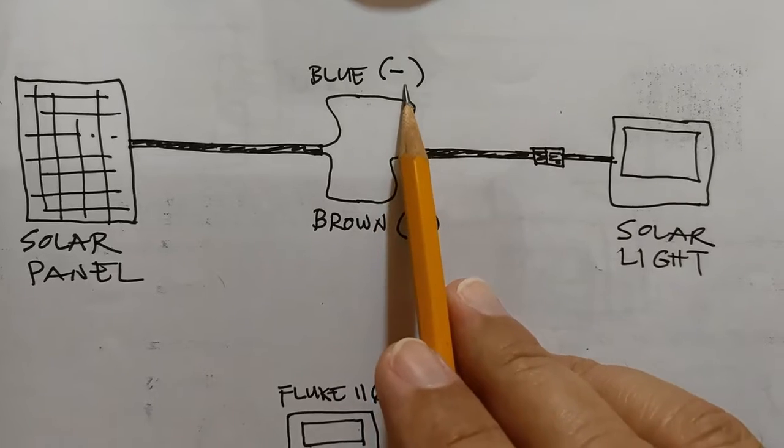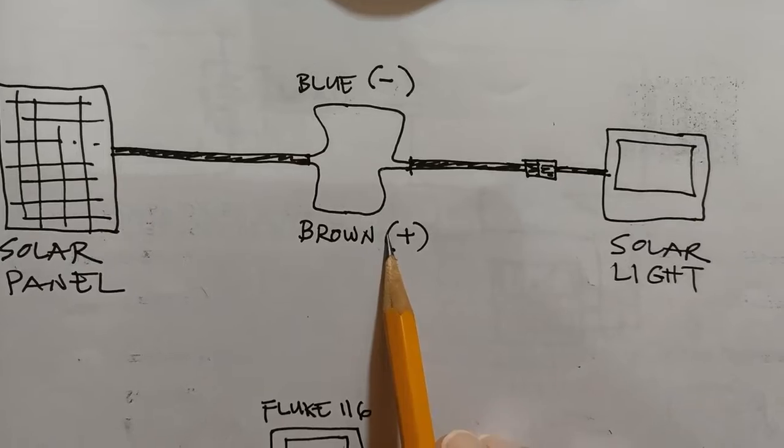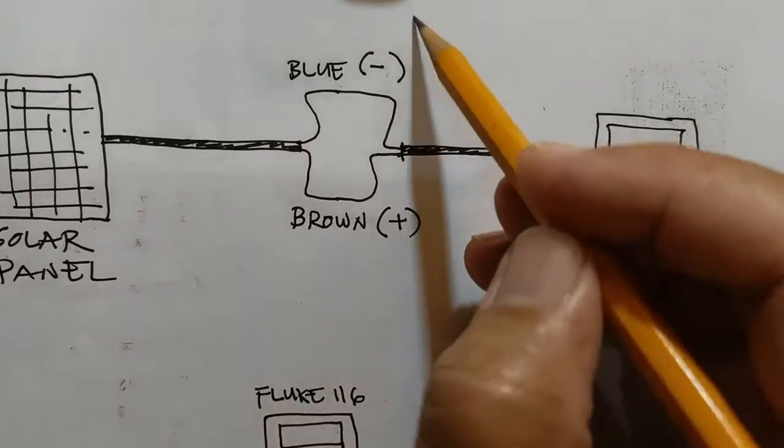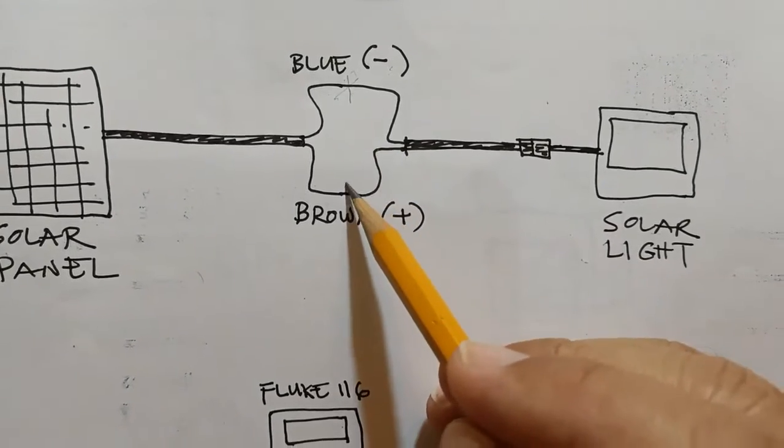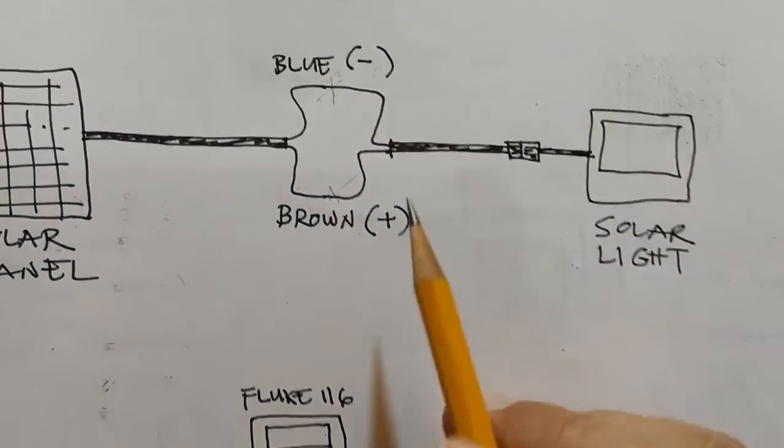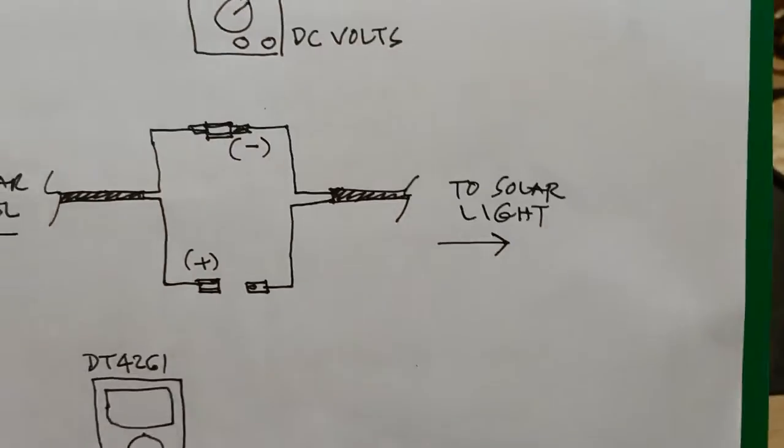The blue conductor represents the negative polarity and the brown conductor represents the positive polarity. I cut them off in this portion in order for me to install crimp connectors there that would facilitate monitoring.